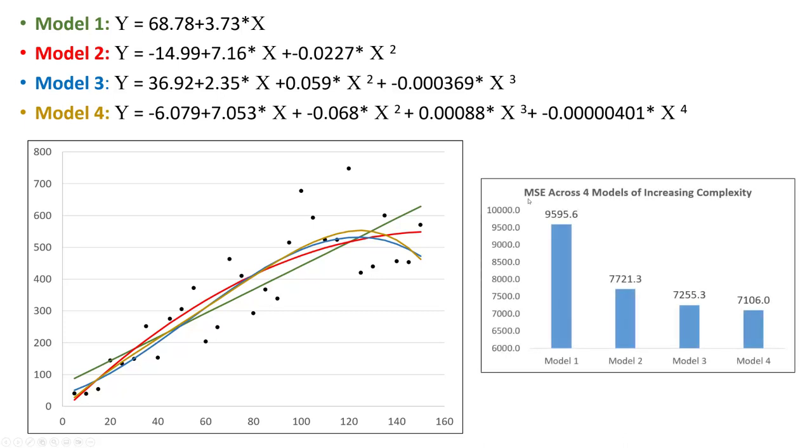Let's calculate mean squared error across these four different models. Notice that when we go from model one to model two, there's a drastic improvement in the model error. But when we go from model two to model three and model three to model four, we see relatively marginal decreases. From model one to model two, it is indeed more complex. However, we appear to be gaining a lot more accuracy. When we go from model two to three and three to four, those gains in accuracy start becoming less obvious. We have to question if adding this complexity is really worth it.